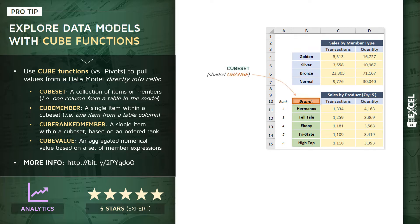The first is called a CubeSet. A CubeSet is a collection of items or cube members from your model — essentially equivalent to an entire column from a table in your model. In this case, we've defined a CubeSet that contains information about product brands.